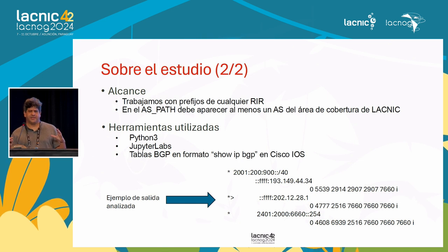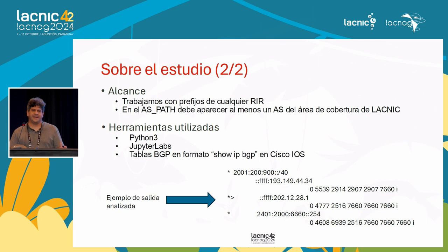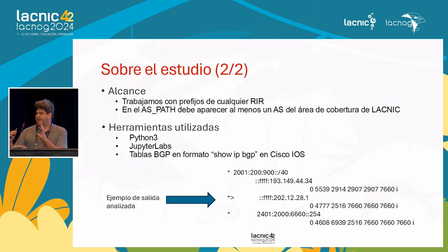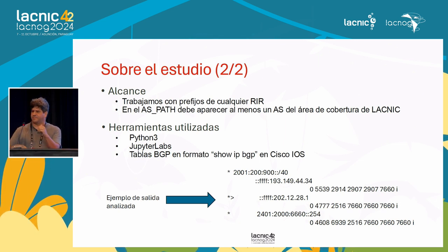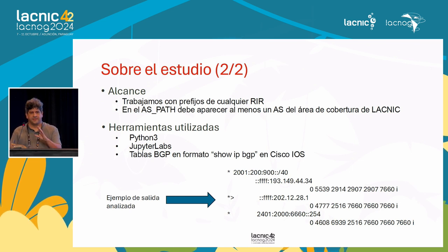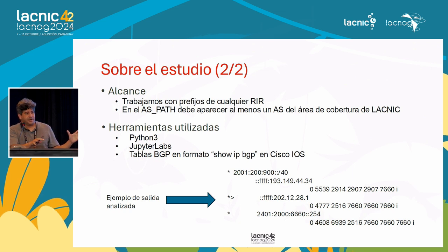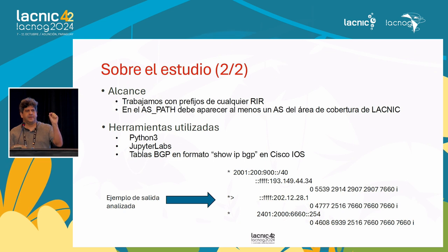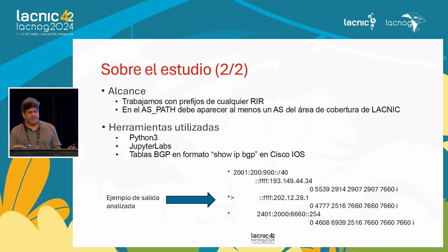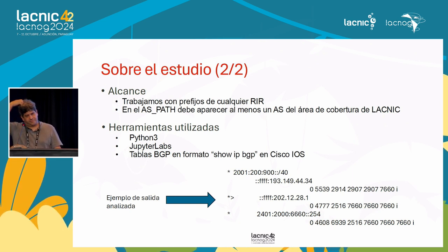When we started to work on this project, we had many ways of doing this. We decided to do the BGP prepend analysis in the region. For the scope of this study, we took all the prefixes in the world where at least one AS in the AS path corresponds to LACNIC. The tools used were Python 3, Jupyter, BGP tables, and show IP BGP.